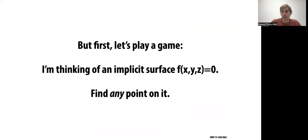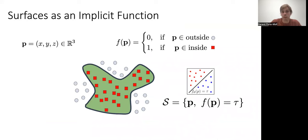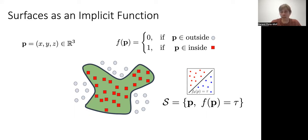It's not straightforward to find a point on an implicit surface. You can query a point and the function tells you if it's inside or outside, but you have to query many points until you find one that is actually at the boundary. There are ways of finding the boundary efficiently, but it's never as efficient as with an explicit method.